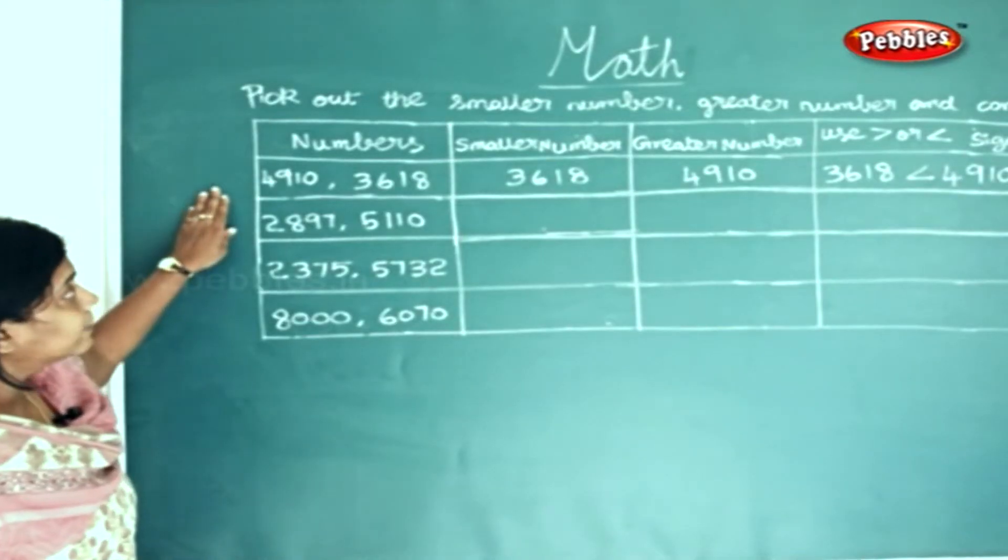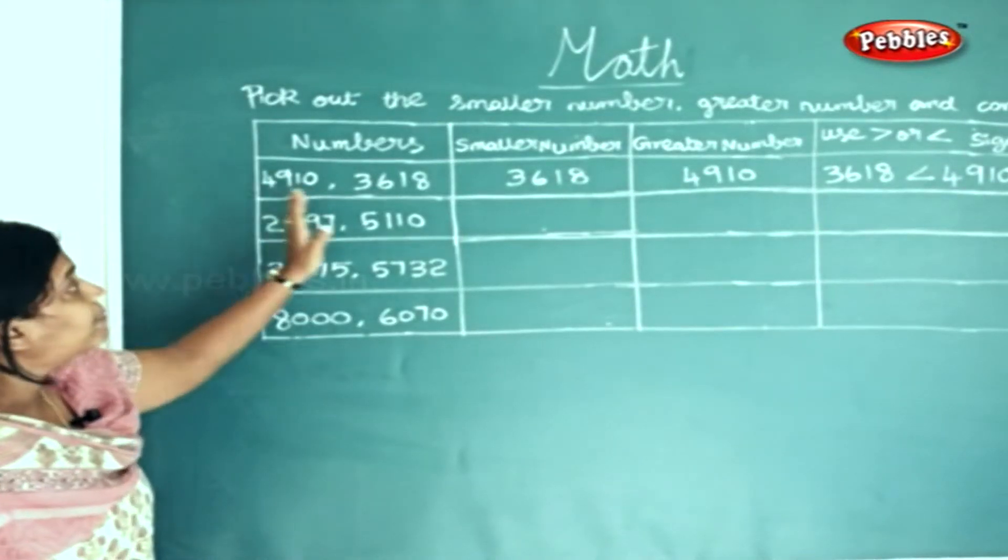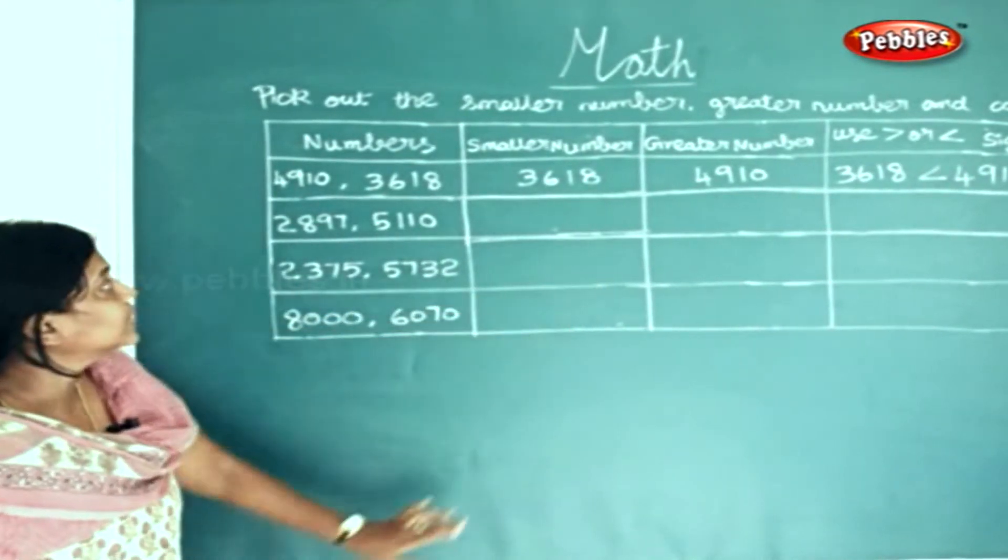Now we will pick out the smaller number, greater number, and compare which is smaller using those signs given there.